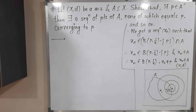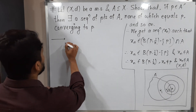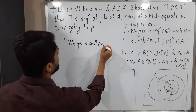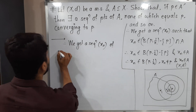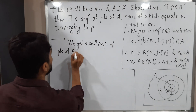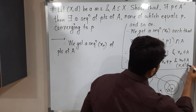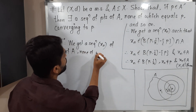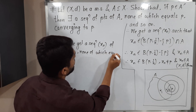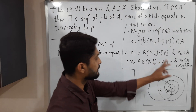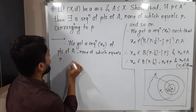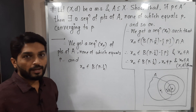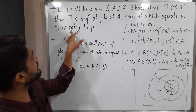Let us write all these things in words now. Therefore we get a sequence {Xn} of points of A, none of which equals P. And Xn belongs to B(P, 1/n). Now we have to prove that this sequence converges to P.